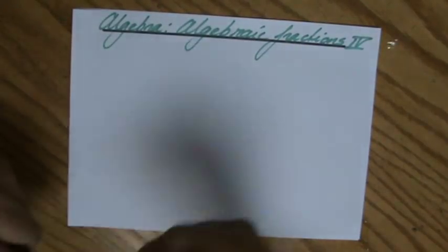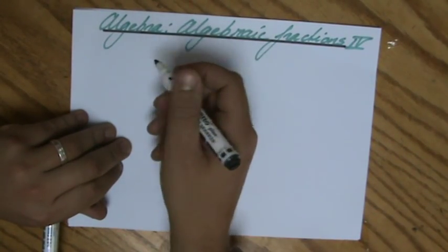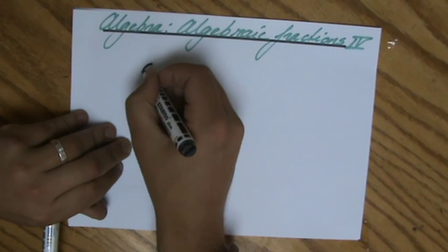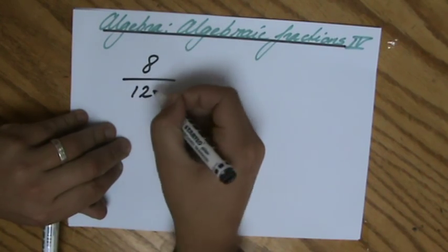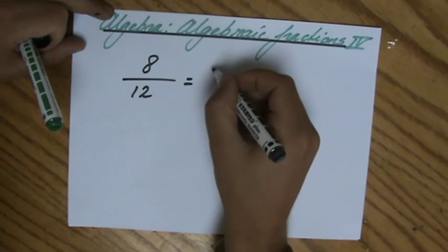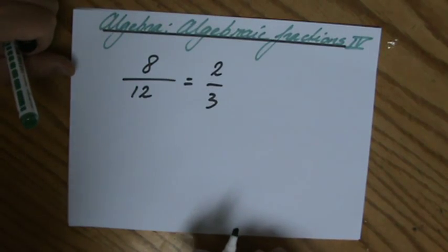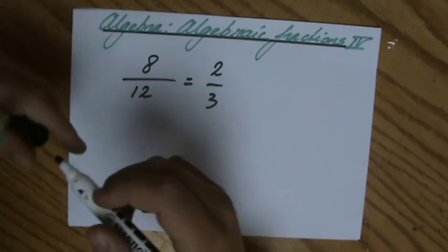What is simplifying a fraction? For instance, in the past you would be asked, let's say we have 8 over 12, and you would be asked to simplify the fraction. Some of you are going to say, well that is 2 over 3. Some of you are able to say that straight away. But why is it 2 over 3?